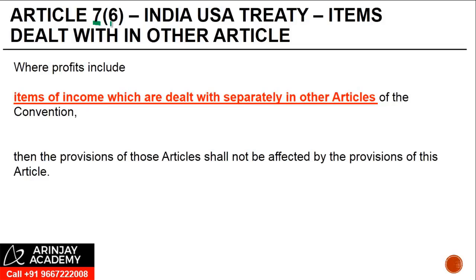Article 7, Paragraph 6 of the India-USA treaty. As mentioned at the beginning of this presentation, business profits could be of two types for the purpose of this convention: one is something dealt with specifically in different articles, like fees for technical services, independent personal services — even interest could be business income in many cases for banks and other organizations — and the second is the general provision for business profit, which is Article 7.